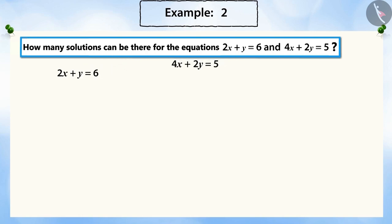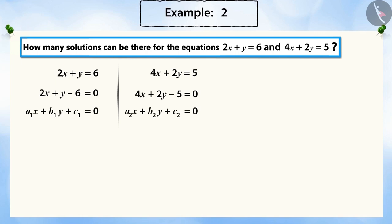How will we find it? Can you find any relation between the coefficients and the constant terms of the given equations? Let's compare the equations with the general form of linear equations in two variables.